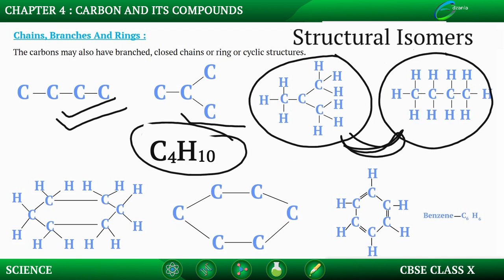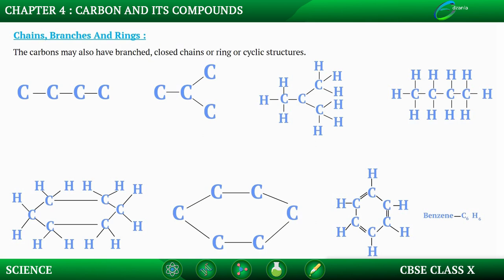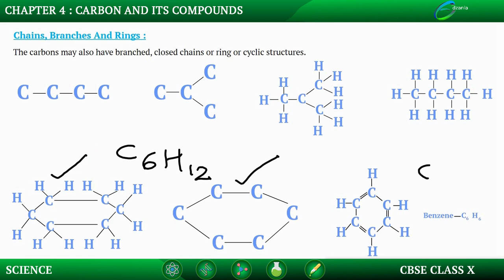The next compound is cyclohexane. The molecular formula of cyclohexane is C6H12. You can draw cyclohexane in a cyclic form — this is the skeleton, and once you fill in the hydrogen atoms, that gives you the full structural formula. In the case of benzene, it has a molecular formula of C6H6, and it is an unsaturated compound because it has double bonds and is cyclic in nature.